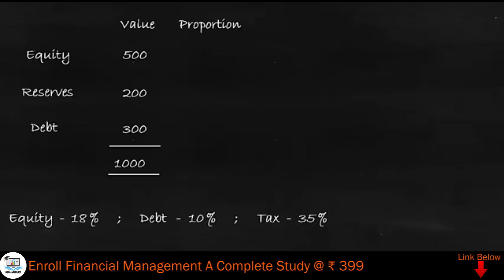Looking at equity: equity is 500 and total funds are 1000, so 500 on 1000 is 50 percent. So 0.5, or 50 percent, is the proportion of equity to the total funds. For reserves, it is 20 percent of total funds, and debt is 30 percent of total funds.